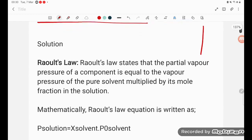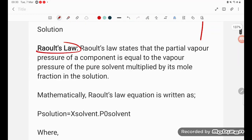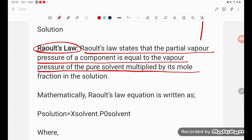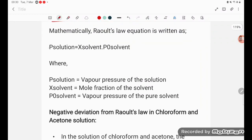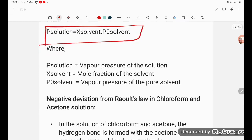If you see the explanation, Raoult's law states that partial vapor pressure of the component is equal to the vapor pressure of the pure solvent multiplied by mole fraction of it in the solution. So that is P solution equals X solvent times P not solvent.